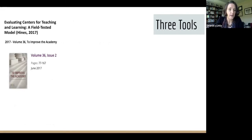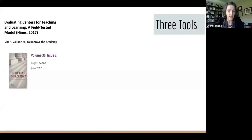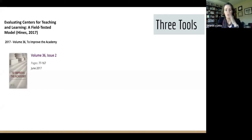The first tool we'll talk about is the Heinz model, which came out in 2017 in To Improve the Academy. It describes four phases: identify the evaluation capacity of the center, map programs and services to the center's mission and outcomes, create an evaluation plan, and implement that plan. Her model is based on a six-level framework built on Kirkpatrick's four-level model, moving from individual participation and satisfaction through participant learning all the way up to institutional change. It's a very extensive and in-depth model for evaluating the impact of a center's efforts.